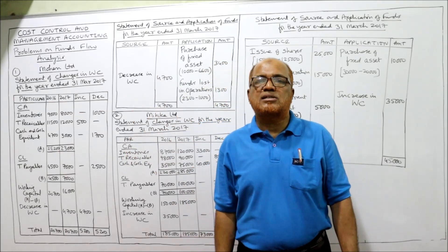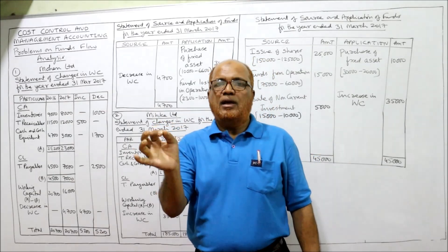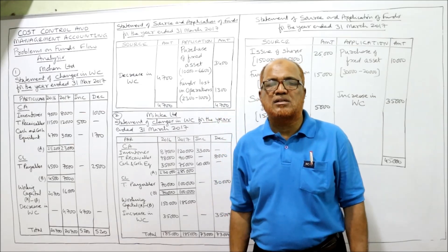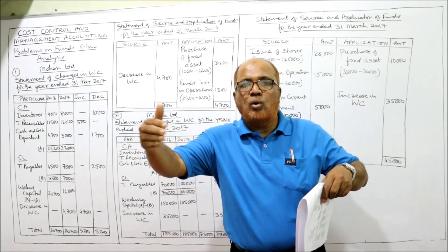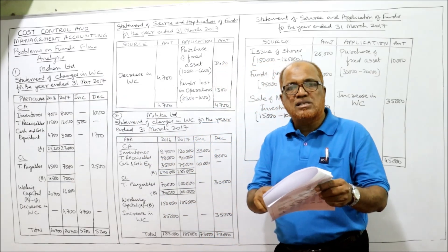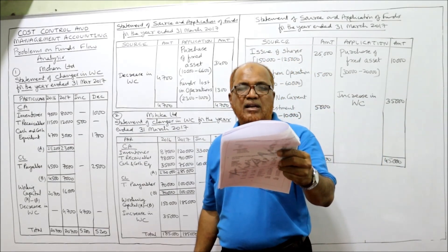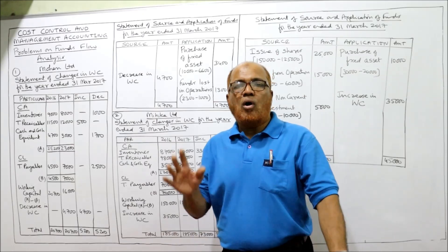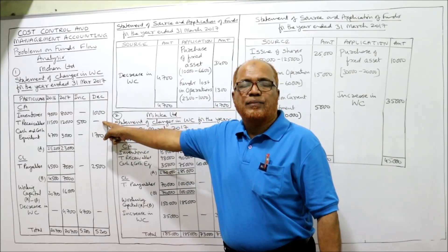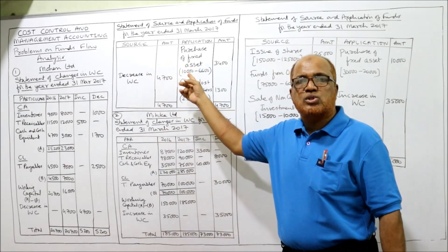Increase in fixed assets means purchase of fixed assets — write it down immediately. When there is a purchase, there is an outflow of cash — application. So we will take this increase in fixed assets as an application of funds. All current assets and current liabilities we take in the statement of changes in working capital. Non-current assets and non-current liabilities we take in source and application.